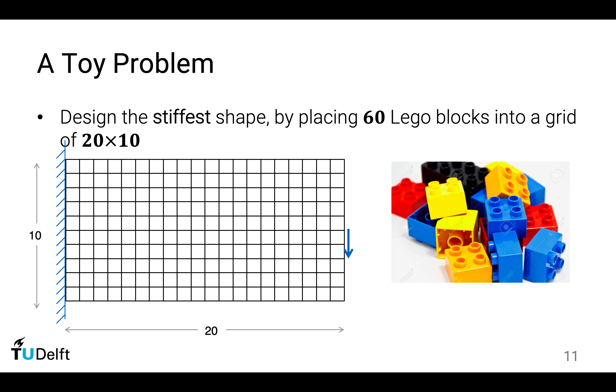Consider we want to build a structure in a design domain which has a dimension 10 by 20. If we want to build a solid structure, we need 200 Lego blocks. We want to find a structure such that when a force is applied on the right-hand side in the middle downwards, we want to find a structure that has the minimum amount of deformation, or in other words, we want to find the stiffest structure.